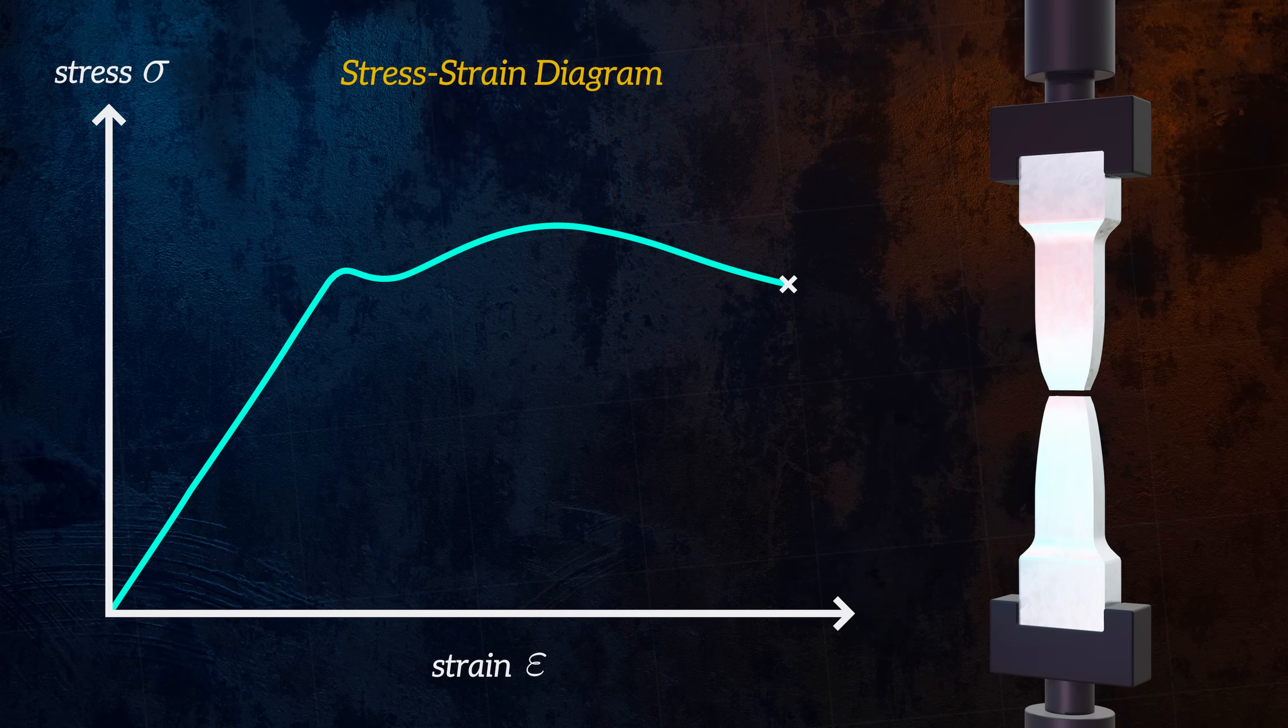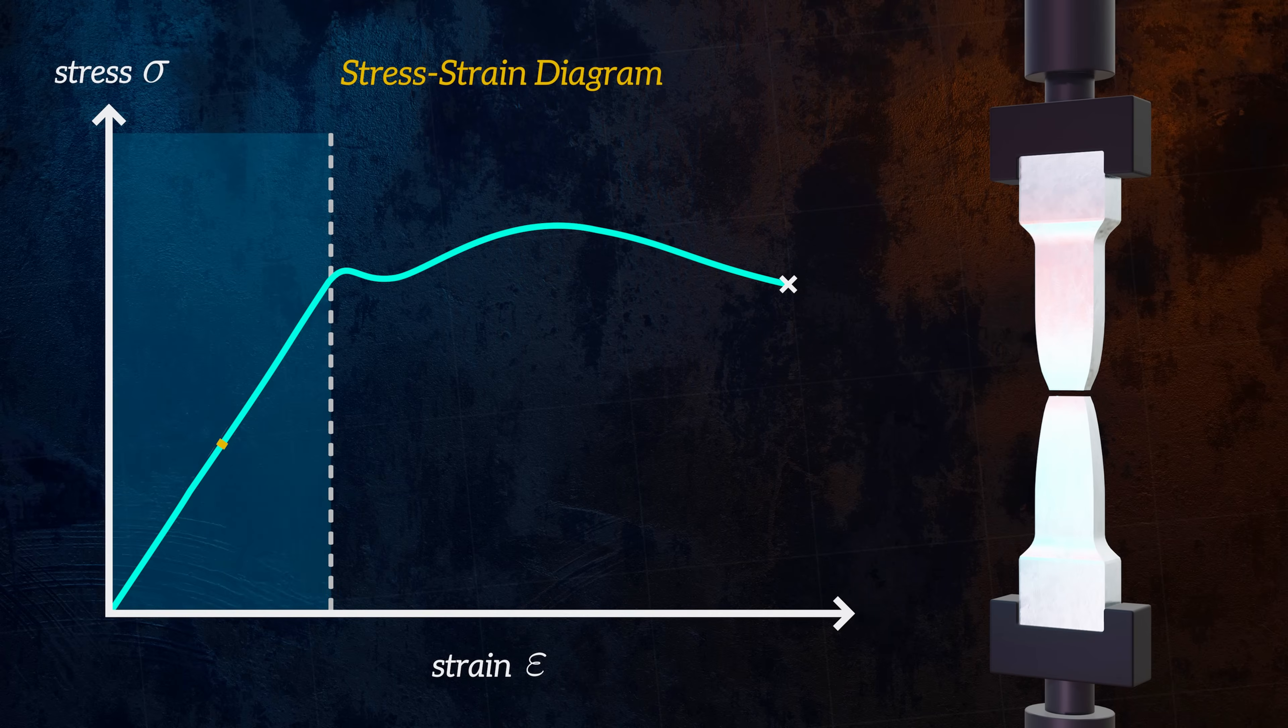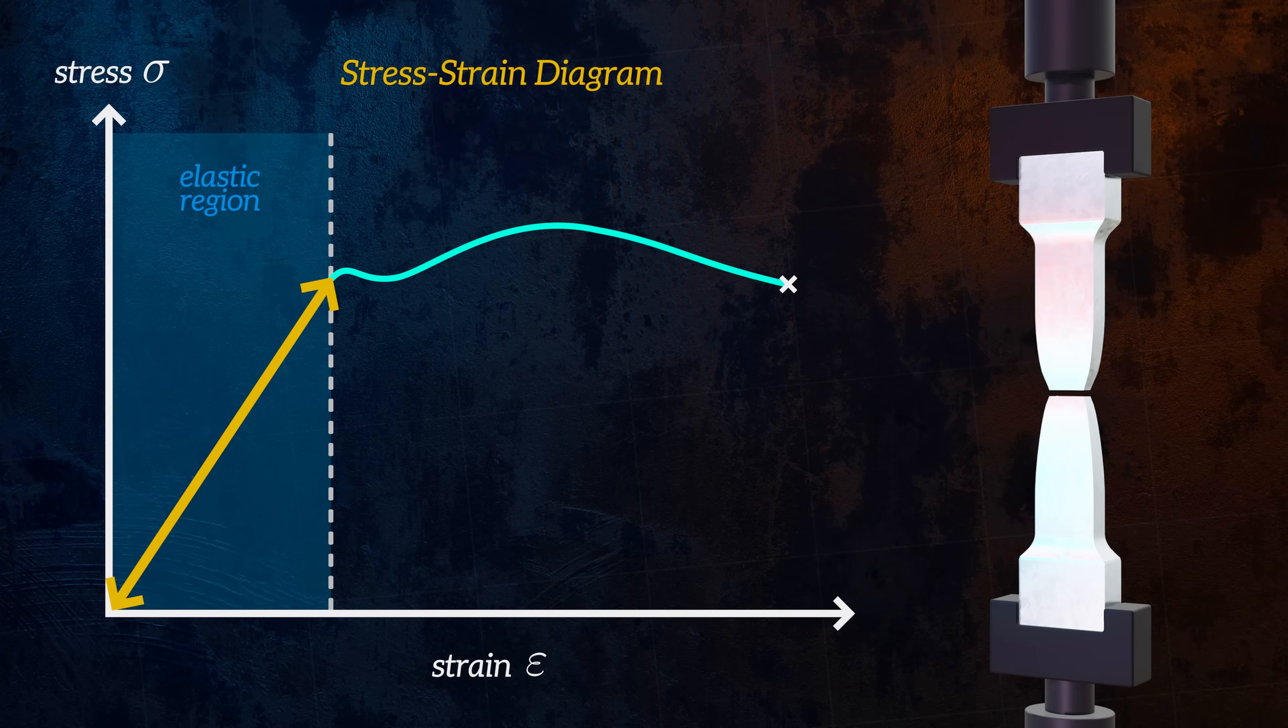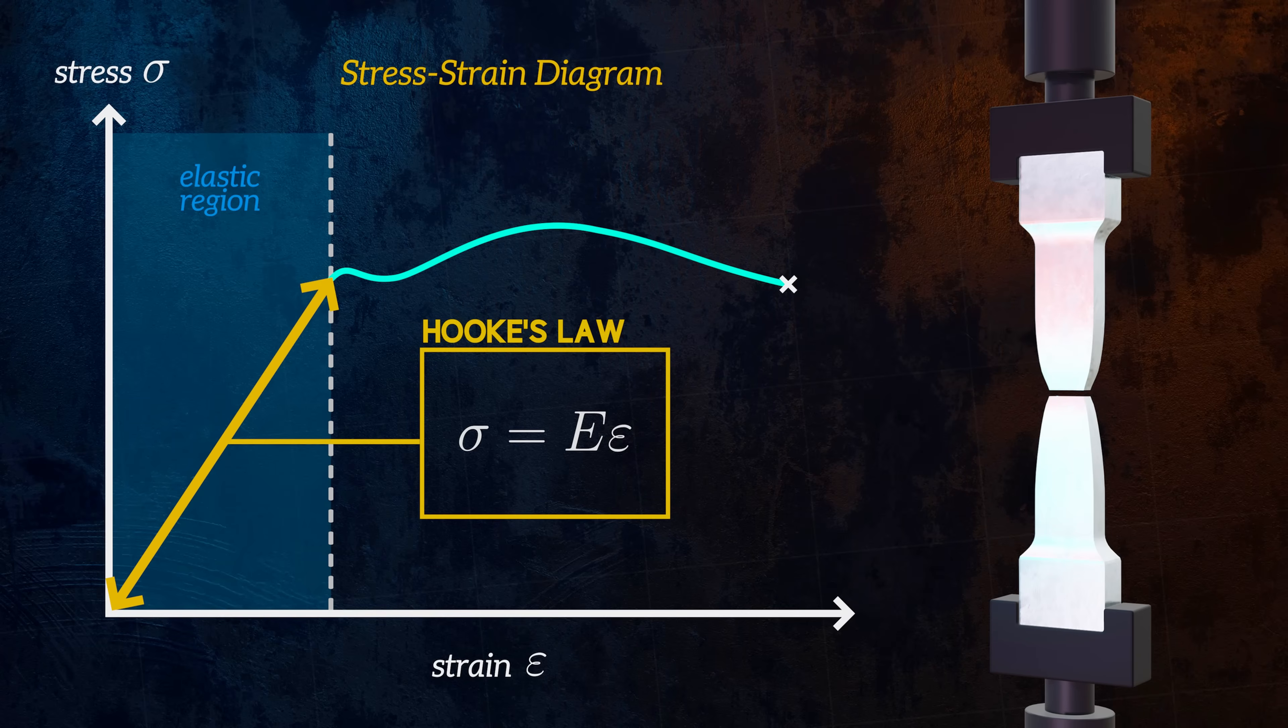Stress-strain diagrams for ductile materials like this one show that there is an initial region for low strain values where the relationship between stress and strain is linear. Deformations occurring in this region are fully reversed when the load is removed and so are said to be elastic. This linear relationship between stress and strain is defined by Hooke's law. The ratio between stress and strain is called Young's modulus, which is an important material property. Hooke's law usually only applies for small strains.